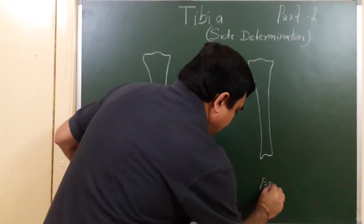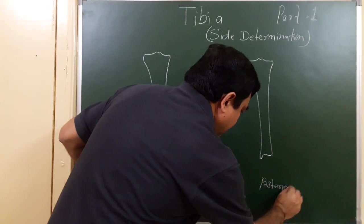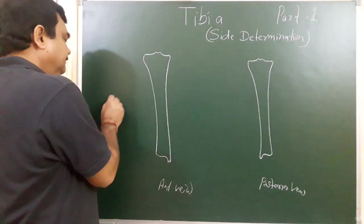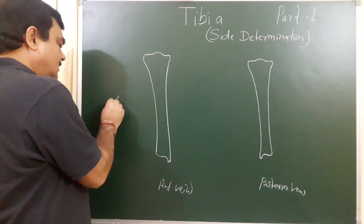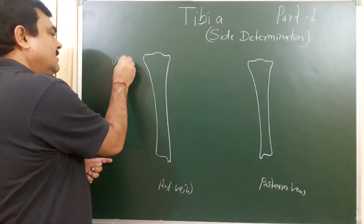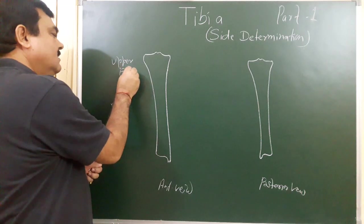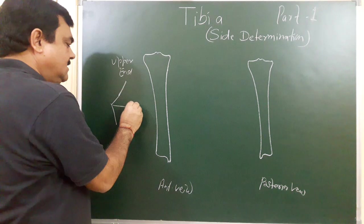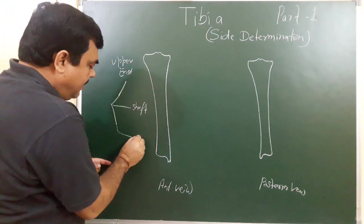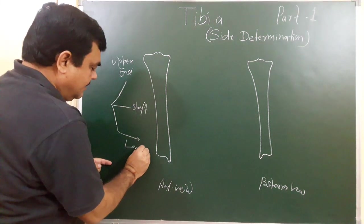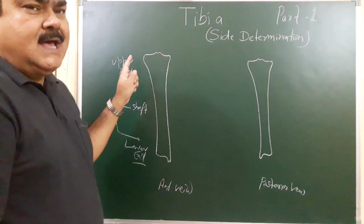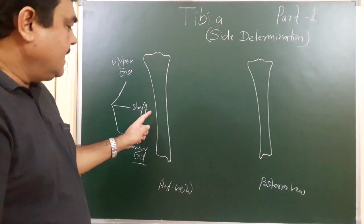The tibia has three parts: the upper part is the upper end, the middle part is the shaft, and the lower part is the lower end. So it has an upper end, a lower end, and a shaft.